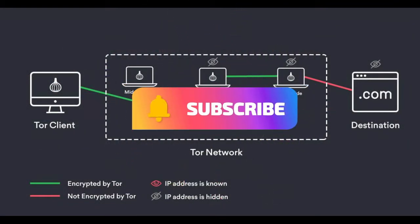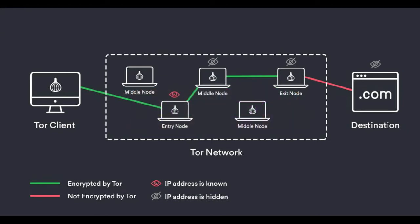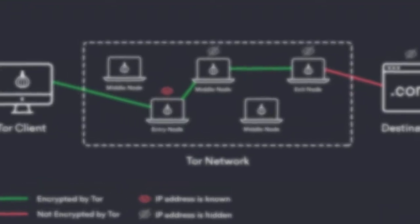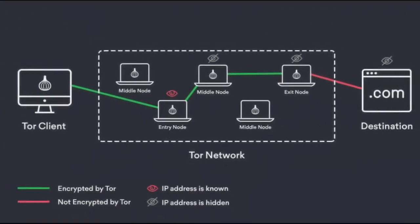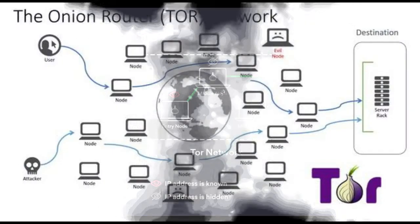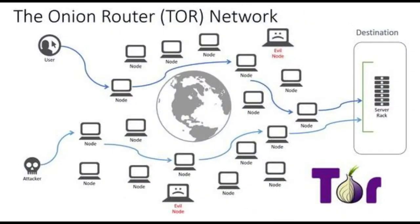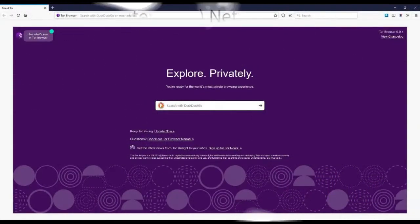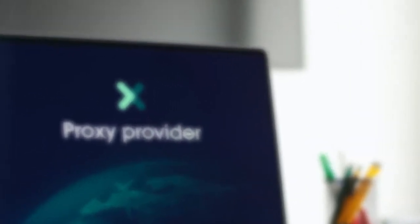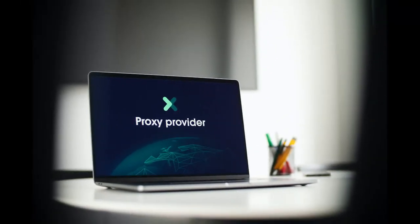There are a few secure communication options that we may have used at some point, but none of them are truly anonymous. SSL Tunnel can encrypt the message you want to transfer, but the source and destination are public. Incognito mode browsing can hide your browsing history locally, but the ISP and the websites you visit know you are visiting them. VPN or proxy servers can be used to mask your identity and location, but they themselves know who you are. None of these techniques are truly anonymous.